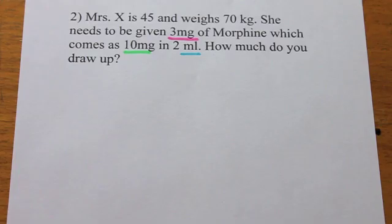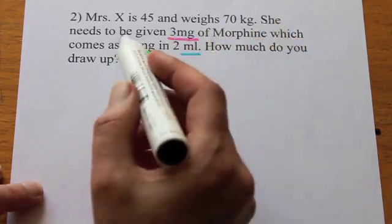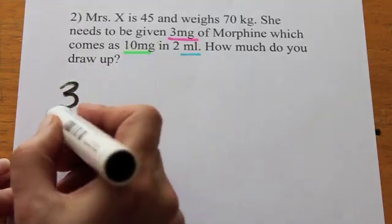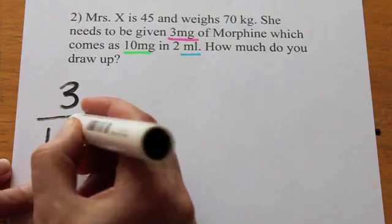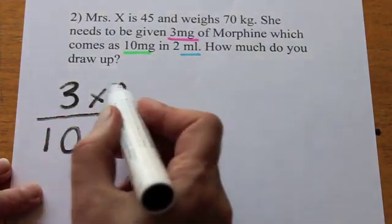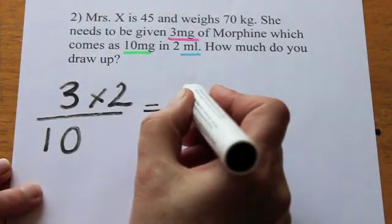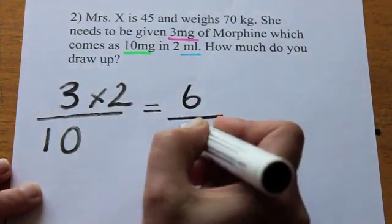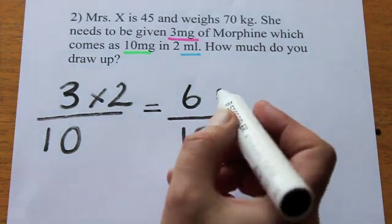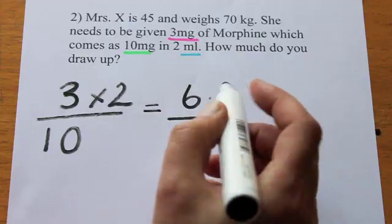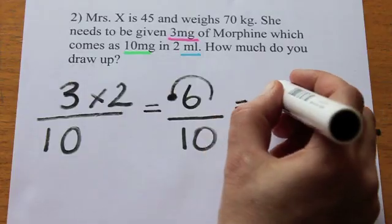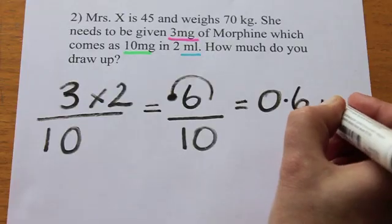Here's question number two. Our patient needs to be given 3mg. The stock comes as 10mg, and this time it's in 2mls. Here I would do the multiplying across the top first: 3 times 2 equals 6, and we still have to divide by 10. The trick for dividing by 10 is to bring the decimal point back one place to the left. Here's its starting position and it goes back one place. So our answer is 0.6ml.